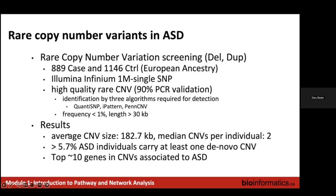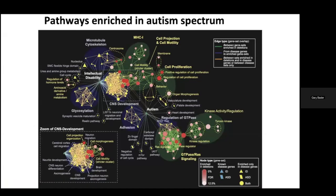There were some copy number variant regions associated with autism spectrum disorder cases, but that only identified about 10 genes — not a lot of additional information. So what we did was a pathway analysis. We took the copy number variants as a whole and asked if any pathways as a whole were affected. For example, taking a pathway like cell proliferation with a hundred genes, we'd ask how many individuals have a copy number variant gain or deletion in one of the genes in that pathway.